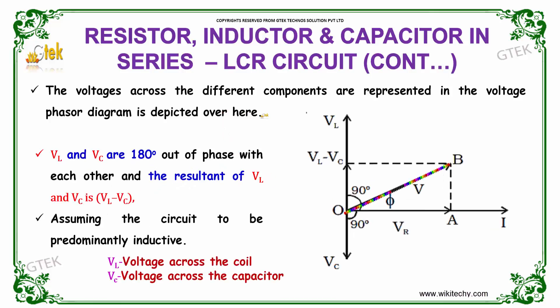The voltage across the different components are represented in the voltage phase diagram, which is depicted here. You are able to see VL and VC are almost 180 degrees out of phase with each other.